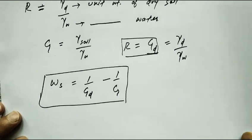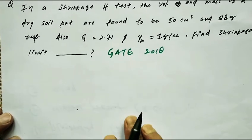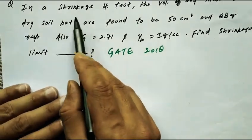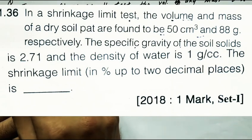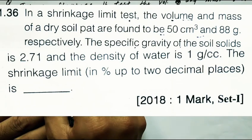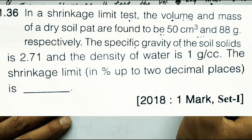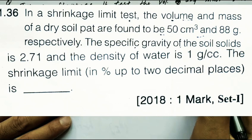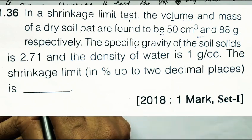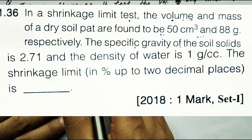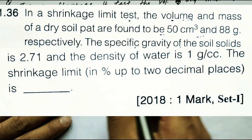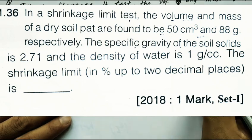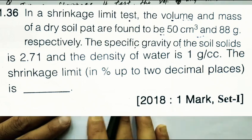Now we will solve a question which was asked previously in the GATE examination. The question says: In a shrinkage limit test, the volume and mass of a dry soil pat are found to be 50 cm³ and 88 grams respectively. The specific gravity of soil is 2.71 and unit weight of water is 1 gram per cc. Find the shrinkage limit.